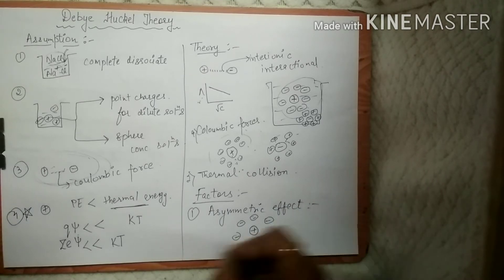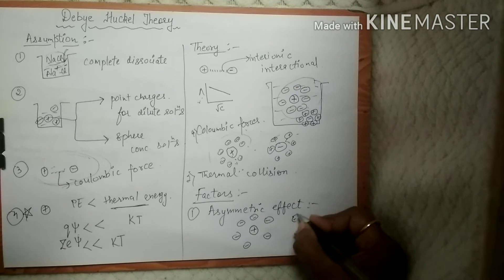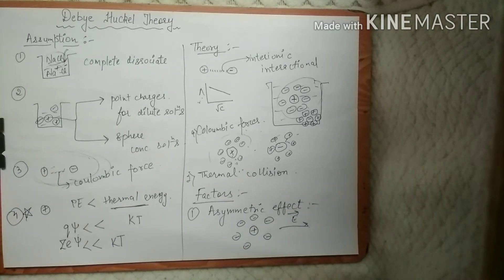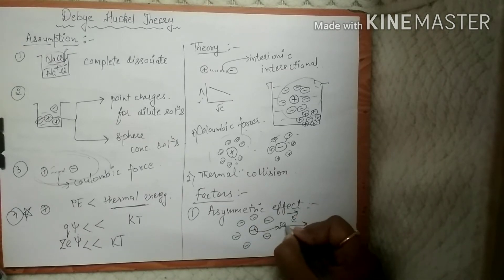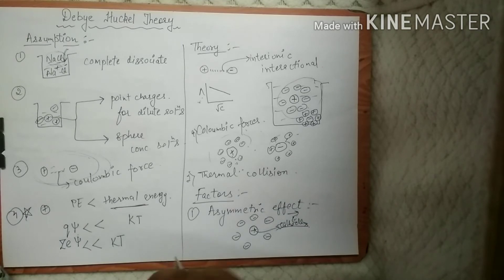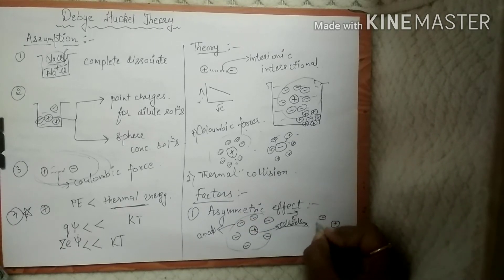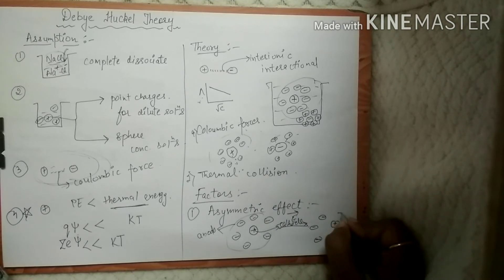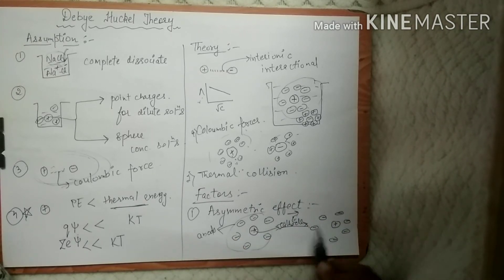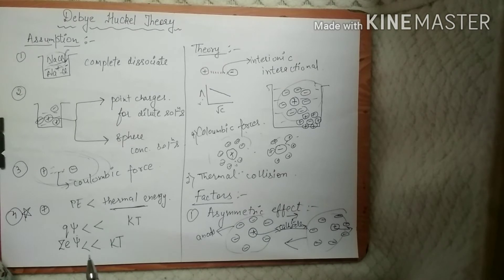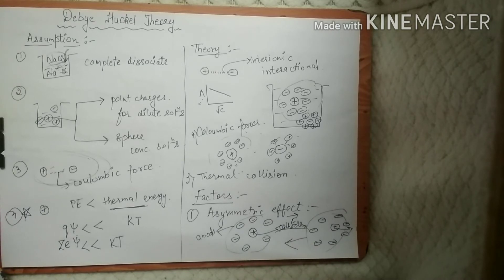When an electric field is applied, the central cation moves towards the cathode while the surrounding anions move towards the anode. This creates a distortion — the positive ion is no longer at the center position. The negative charges move towards the anode and the positive charge moves towards the cathode, so the symmetry is distorted. This is known as the asymmetric effect.